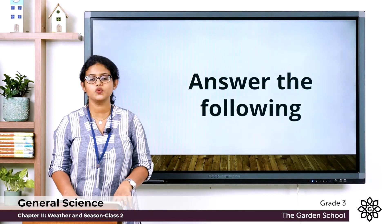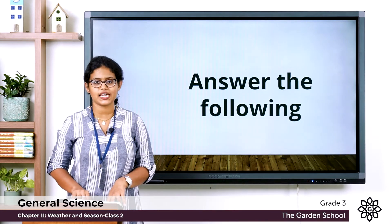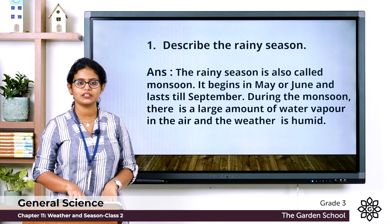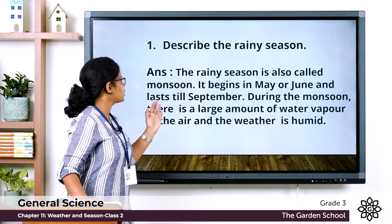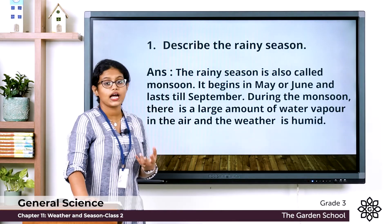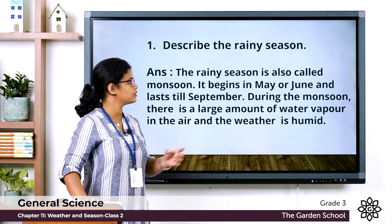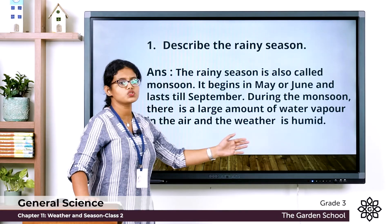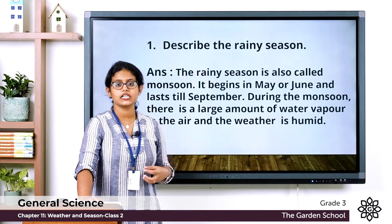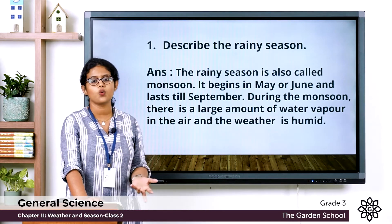Now let's move to the fourth exercise — answer the following questions in two or three sentences. First: describe the rainy season. The rainy season is also called monsoon. It begins in May or June and lasts till September. During the monsoon there is a large amount of water vapour in the air and the weather is humid.